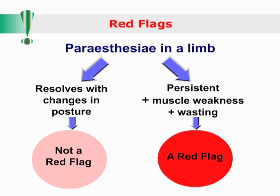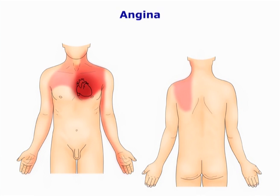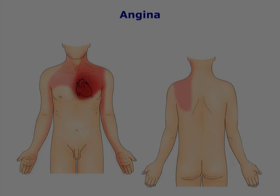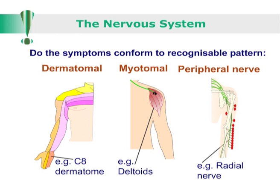Likewise, transient paresthesia in a limb that resolves with changes in posture may simply be due to temporary compression of a vessel or a nerve. Symptoms from the heart tend to have a characteristic referral pattern which involves the precordial. It is for you as the clinician to then discern whether these symptoms conform to recognisable patterns.